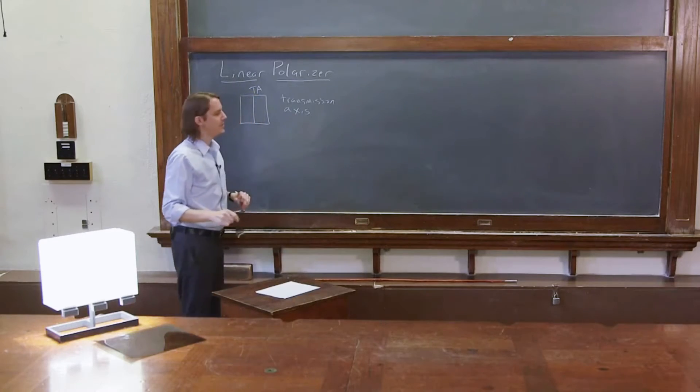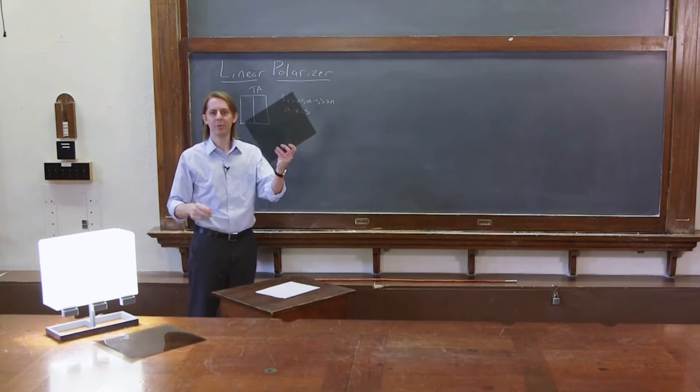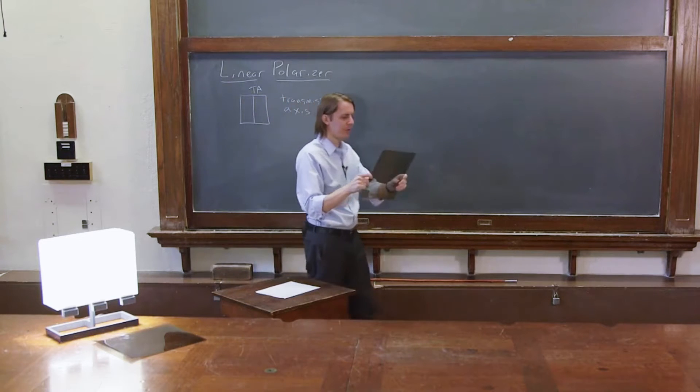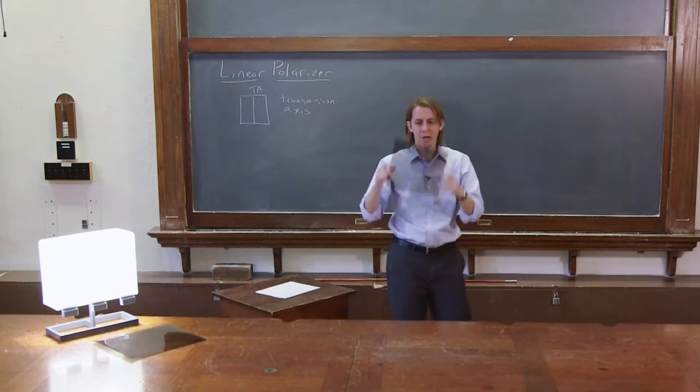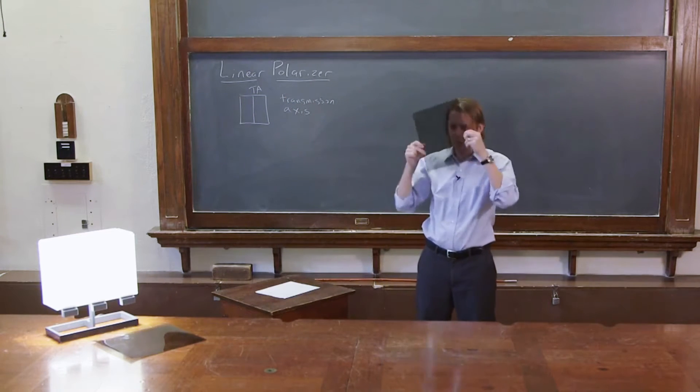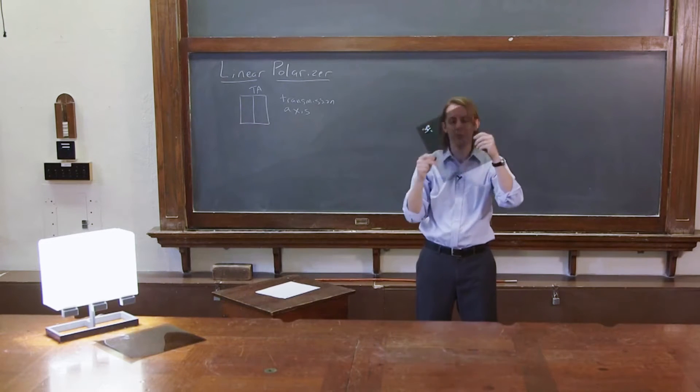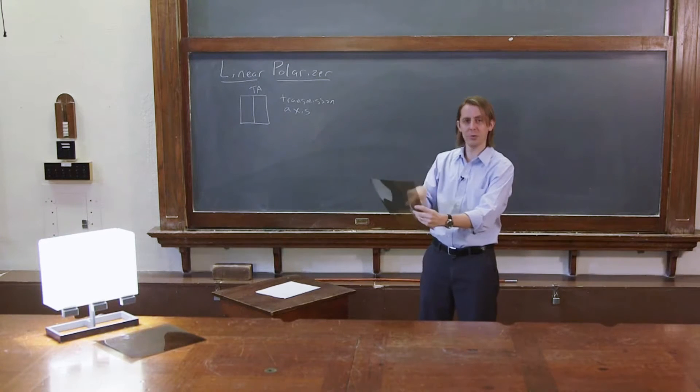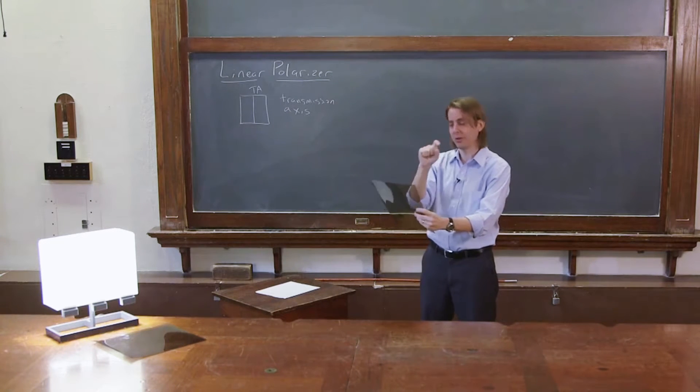And the transmission axis is hardly ever labeled on one of these. What you'll often see in a lab where people are working with polarization is they'll pick up a polarizer, usually not this big, usually small, and they'll do this with it and hold it in front of their face and look around. And what they're doing is figuring out which way is the transmission axis. It's usually cut along one of the two square axes of the thing unless it's round.